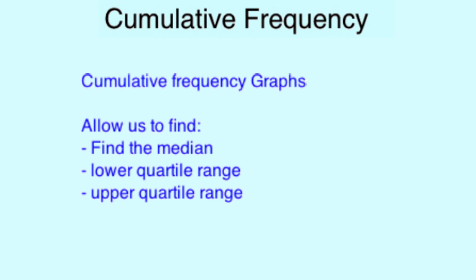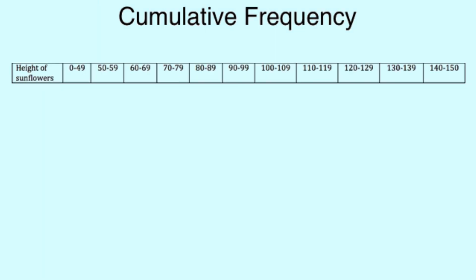To begin with, we make a table, first starting with our data labels. For this example, we'll be using the heights of sunflowers planted in a small field. As you can see, our sunflowers grew from somewhere below 49 centimeters all the way up to 150 centimeters.